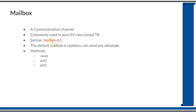Here is the syntax to declare a mailbox: the keyword mailbox followed by the mailbox name. The commonly used methods associated with a mailbox are new, put, and get. The new method creates a mailbox and returns a handle to it. Put and get are used to send something to the mailbox and retrieve something from it. By default, a mailbox is typeless, so it can send any type of data.